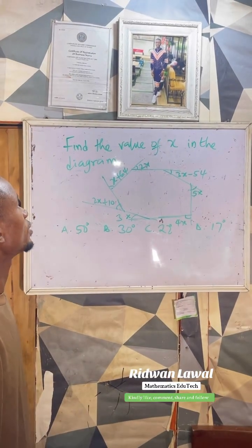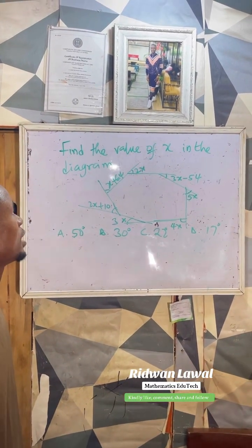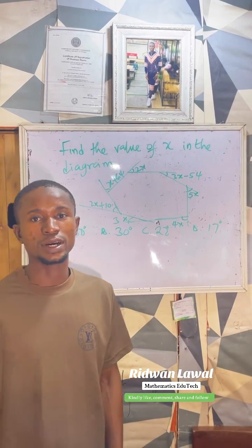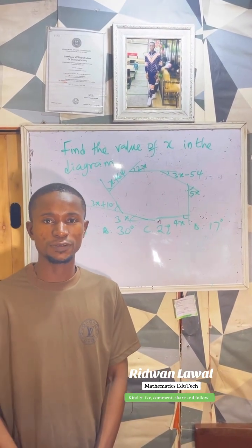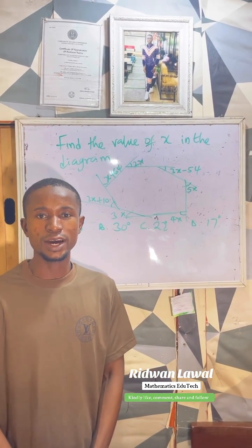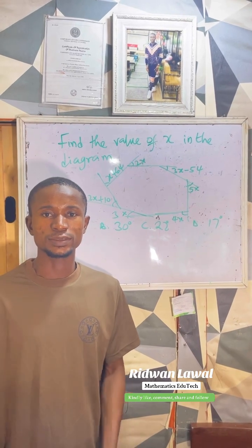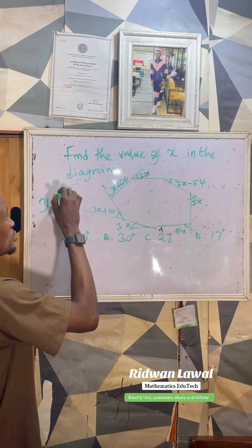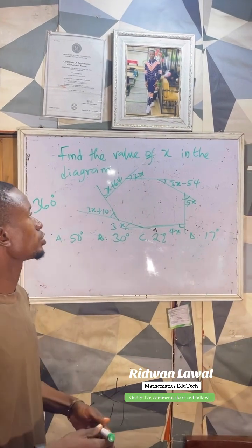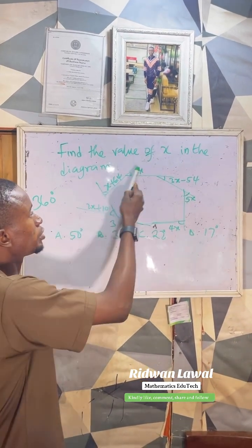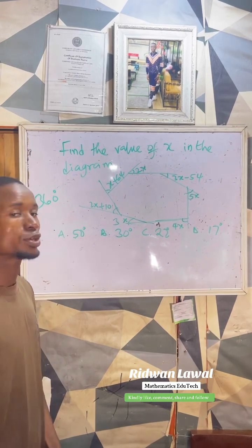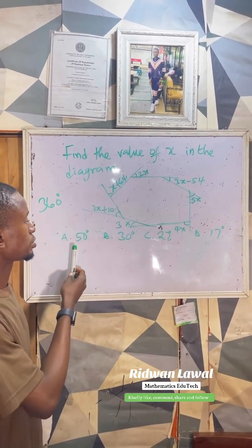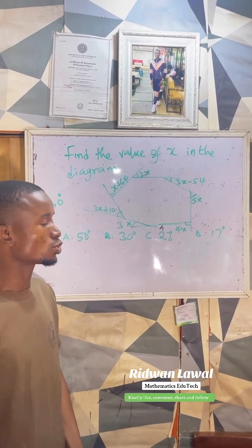To find the value of x in the diagram, this diagram is a polygon and we know that the sum of exterior angles of any polygon is 360 degrees. So we are going to take the sum of all these angles to be equal to 360 degrees. These are the options we have: 50, 30, 22, and 17.